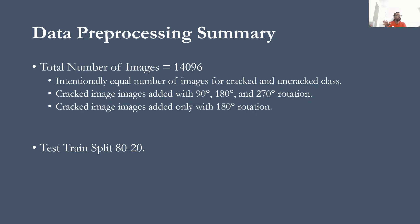So after doing all this, I had a total of 14,096 images in my database that I had in my Python. But something that I maintained here was to have cracked and uncracked images equal, which I performed by removing some of the uncracked images, so that there wouldn't be any bias when I'm trying to train the model.